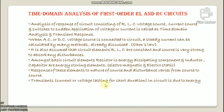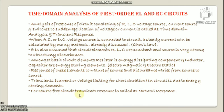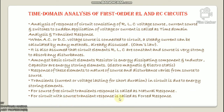A transient is a current or voltage lasting for a short duration. For source-free circuits, the transient response is called the natural response. For circuits with a source, the transient response is called the forced response.